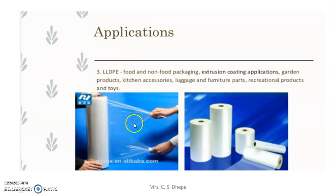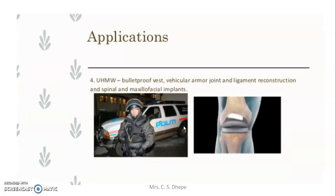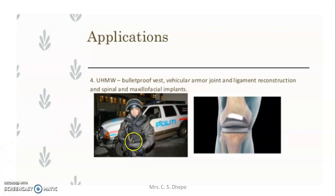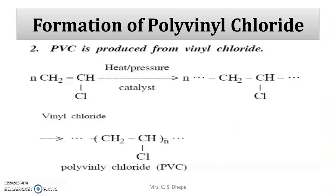Polyethylene is used for lamination and food packing. Ultra-high molecular weight polyethylene (UHMWPE) is used for bulletproof jackets and for ligament joint reconstruction — the material used in such surgical reconstruction is ultra-high molecular weight polyethylene.